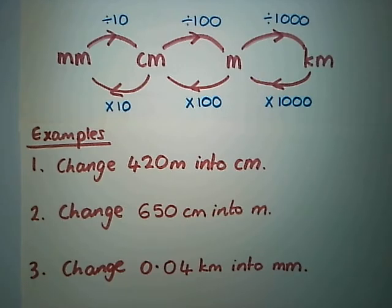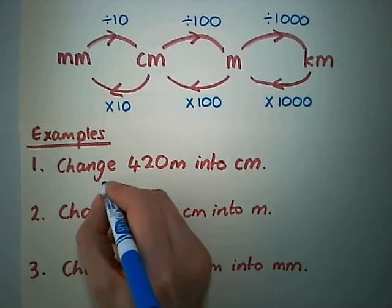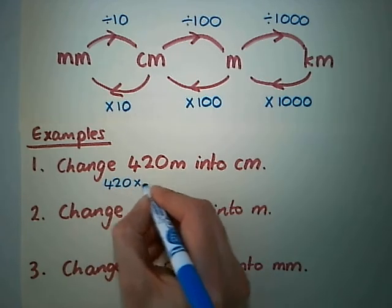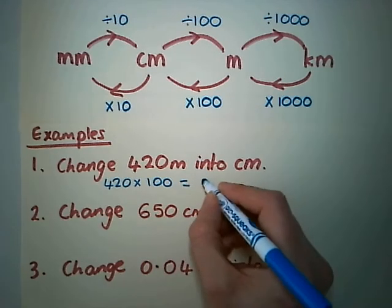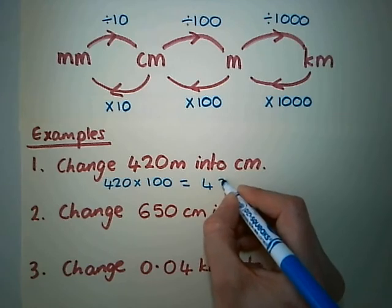The first example is how to change 420 meters into centimeters. If you look at the table above, to get from meters to centimeters we're going to times by 100. So 420 × 100 = 42,000 centimeters.